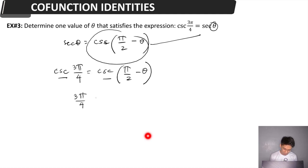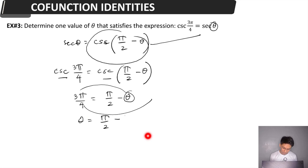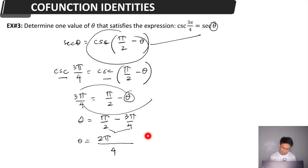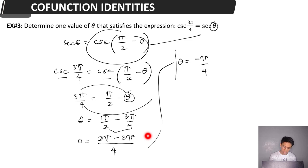Substituting into the equation: cosecant(3π/4) = cosecant(π/2 − θ). Setting the angle measures equal: 3π/4 = π/2 − θ. Rearranging, theta = π/2 − 3π/4. Finding the LCD of 2 and 4, which is 4: theta = 2π/4 − 3π/4 = −π/4. This is one value of our theta for Example 3.